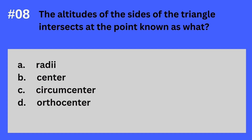Question 8. The altitudes of the sides of the triangle intersect at the point known as what? A. Radii. B. Center. C. Circumcenter. D. Orthocenter. The answer? It's D. Orthocenter. The altitudes of the sides of the triangle intersect at the point known as orthocenter.